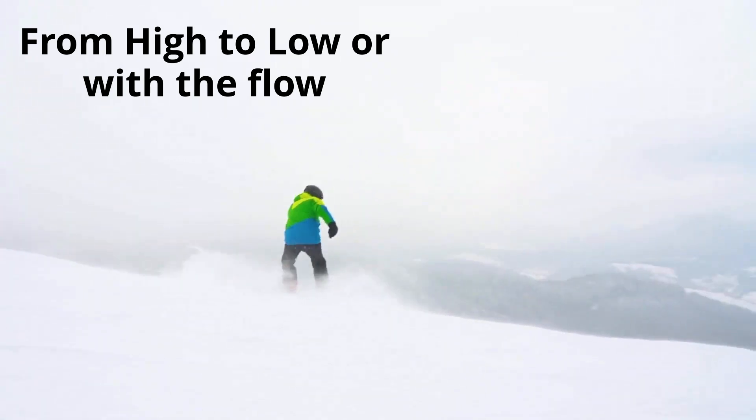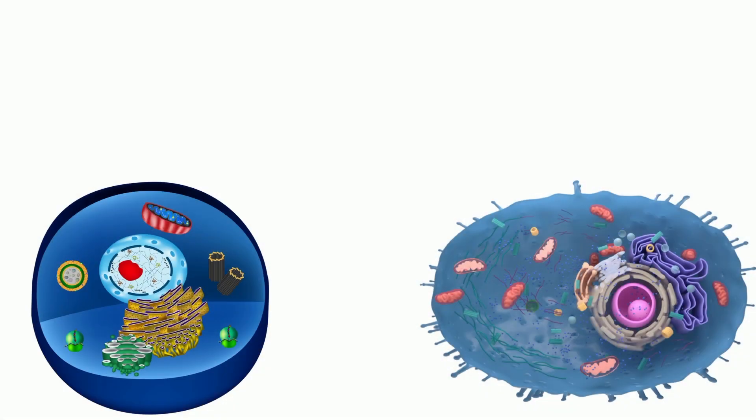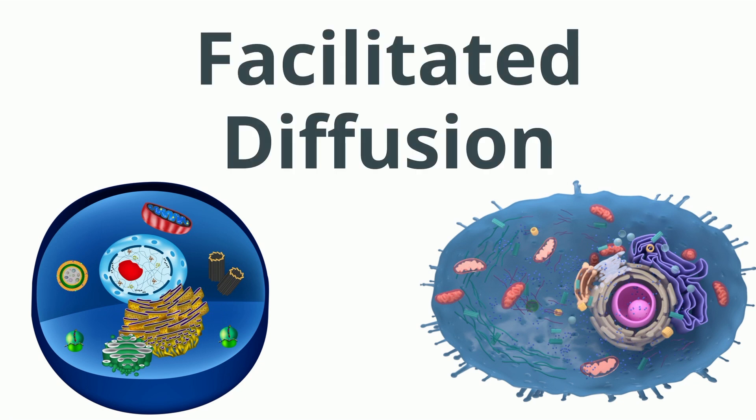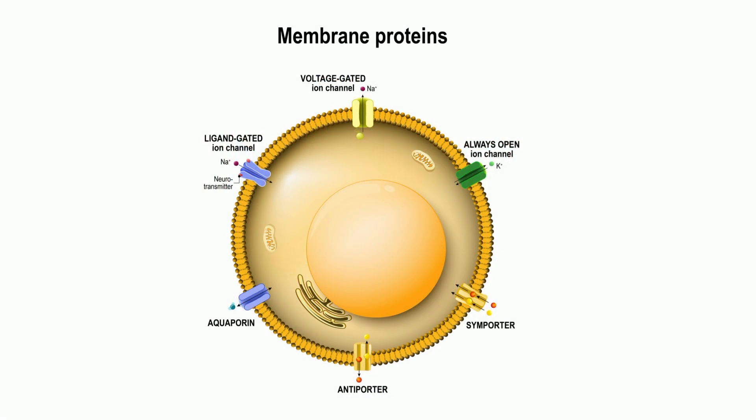However, there are other methods of passive transport called facilitated diffusion. With facilitated diffusion, a channel or protein is used to help move particles in and out of the cell. For example, glucose will move from an area of high concentration to low concentration but will need a carrier protein to move into and out of the cell. These carrier proteins do not require ATP and move objects using diffusion.